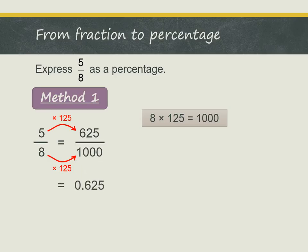Now we can write this as a decimal 0.625. Then using what we have learned about converting a decimal to a percentage, we can move the decimal point 2 places to the right. And we get the answer 62.5%.